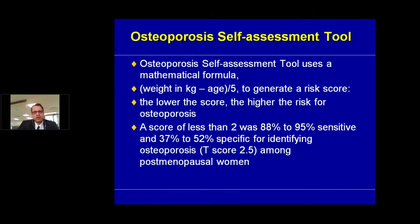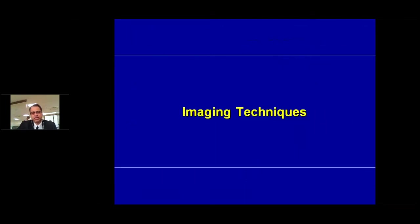There's another tool called the Osteoporosis Self-Assessment Tool, which is a mathematical formula: weight minus age, divided by 5. This helps generate a risk score. The lower the score, the higher the risk of osteoporosis. If the score is less than 2, it is 90% sensitive and 50% specific for identifying osteoporosis in the post-menopausal age group.